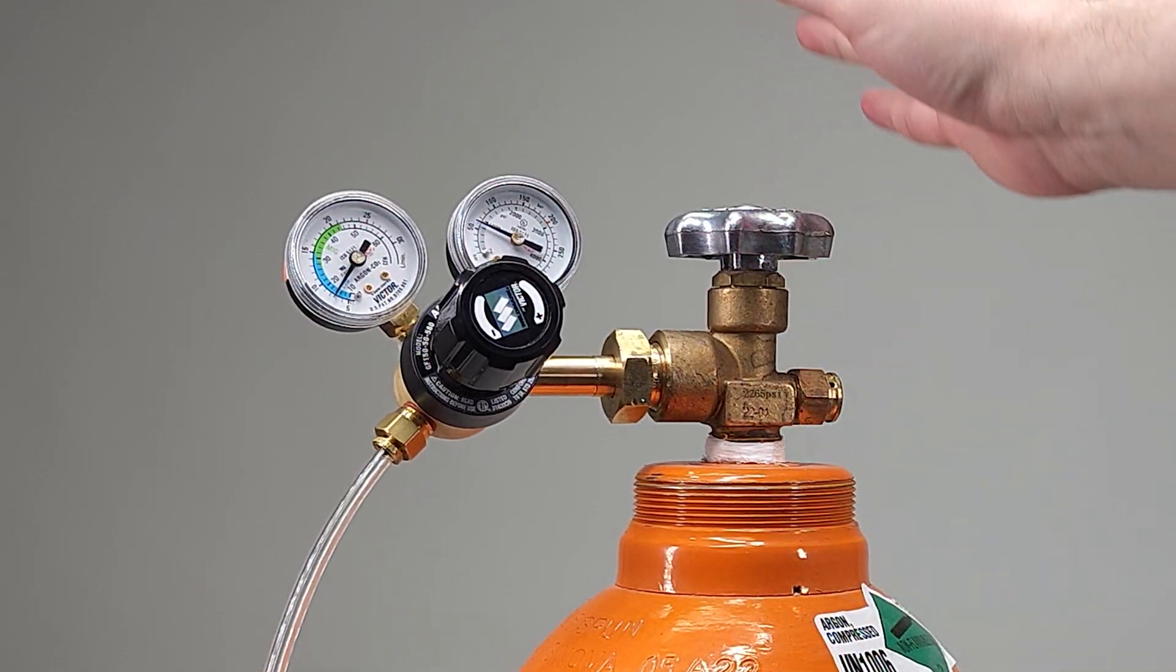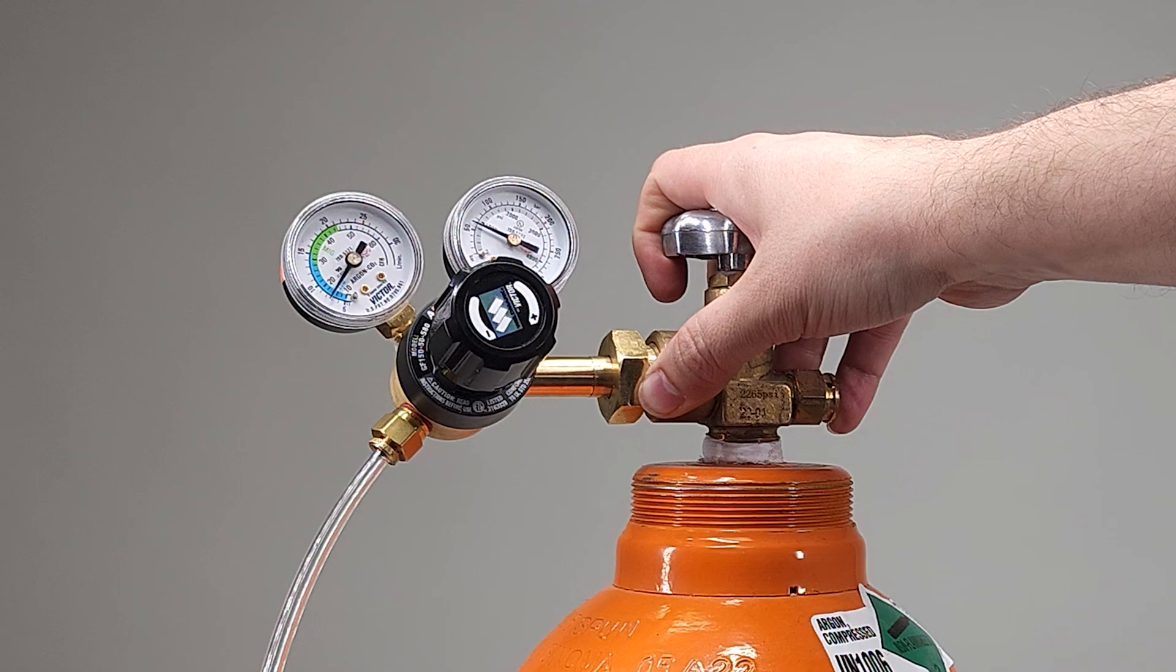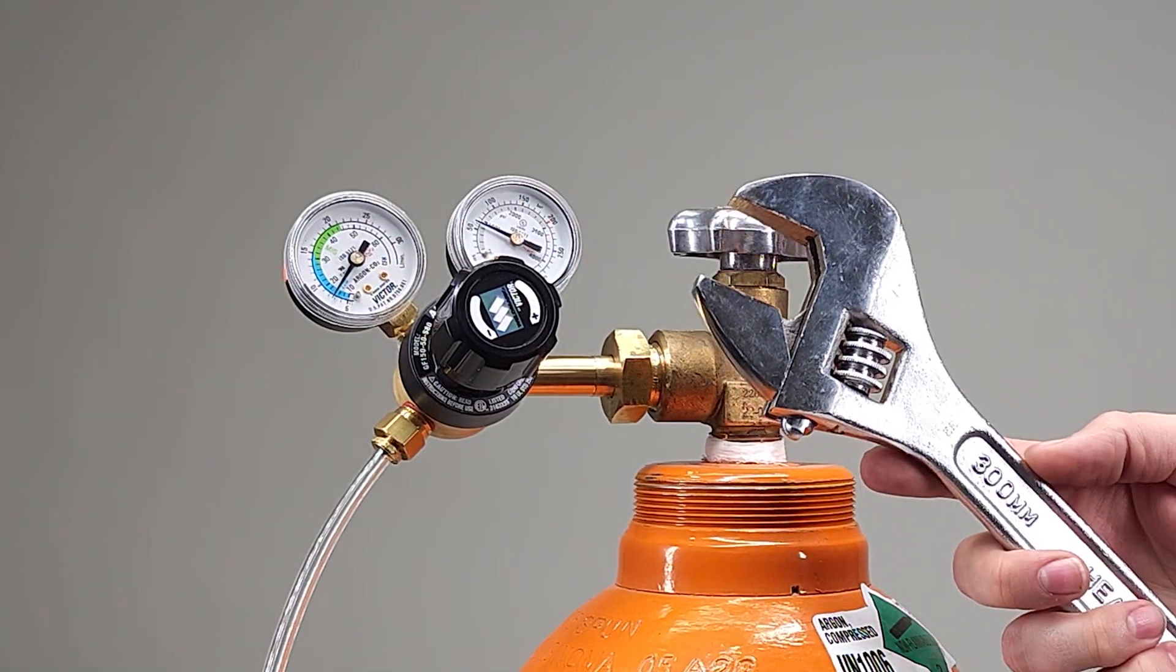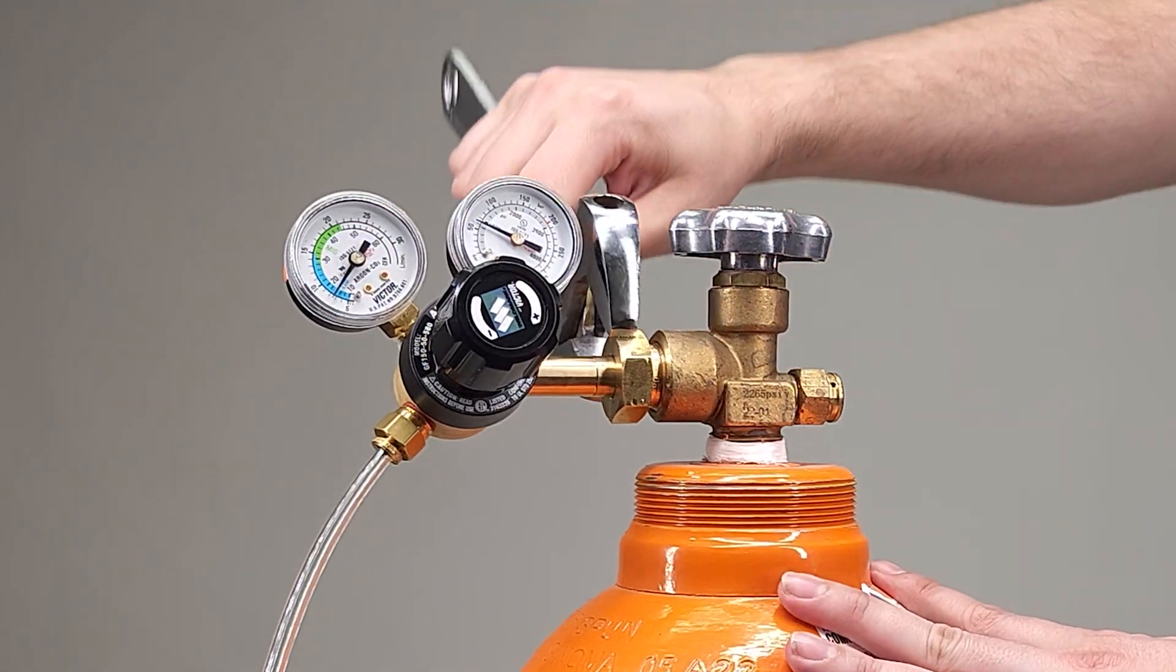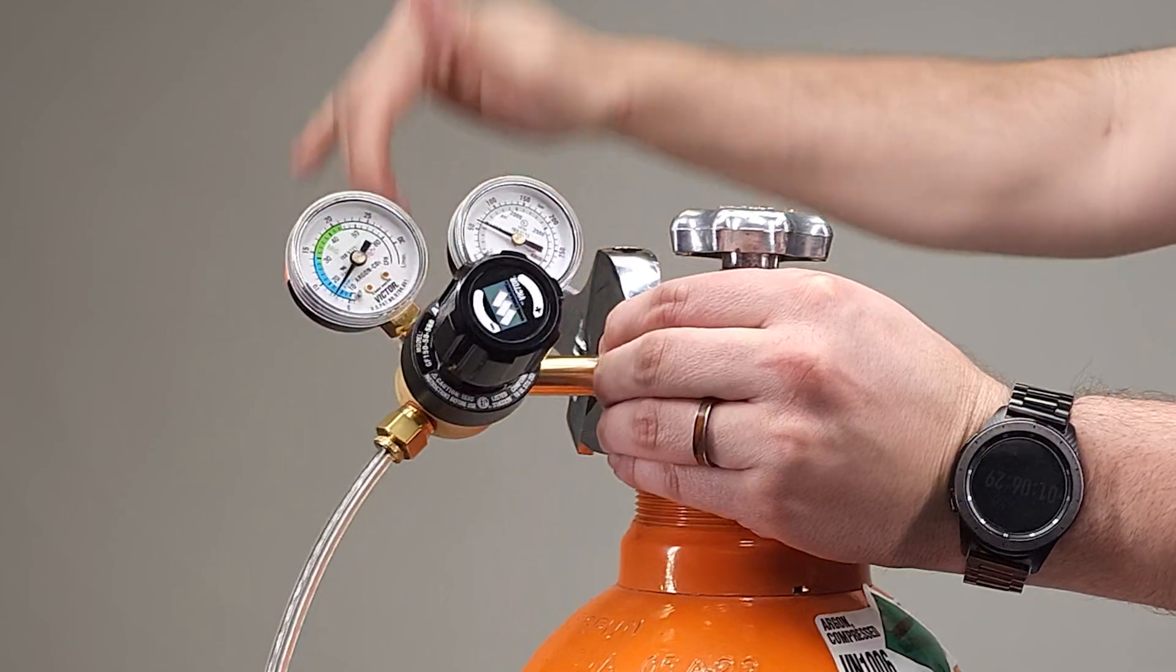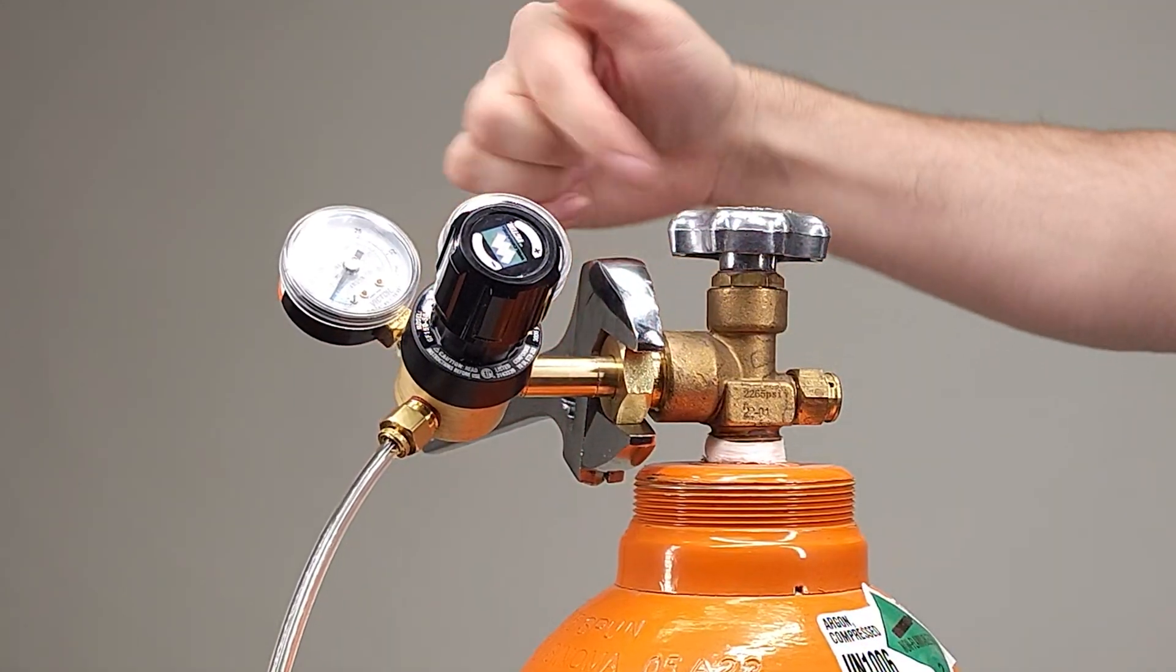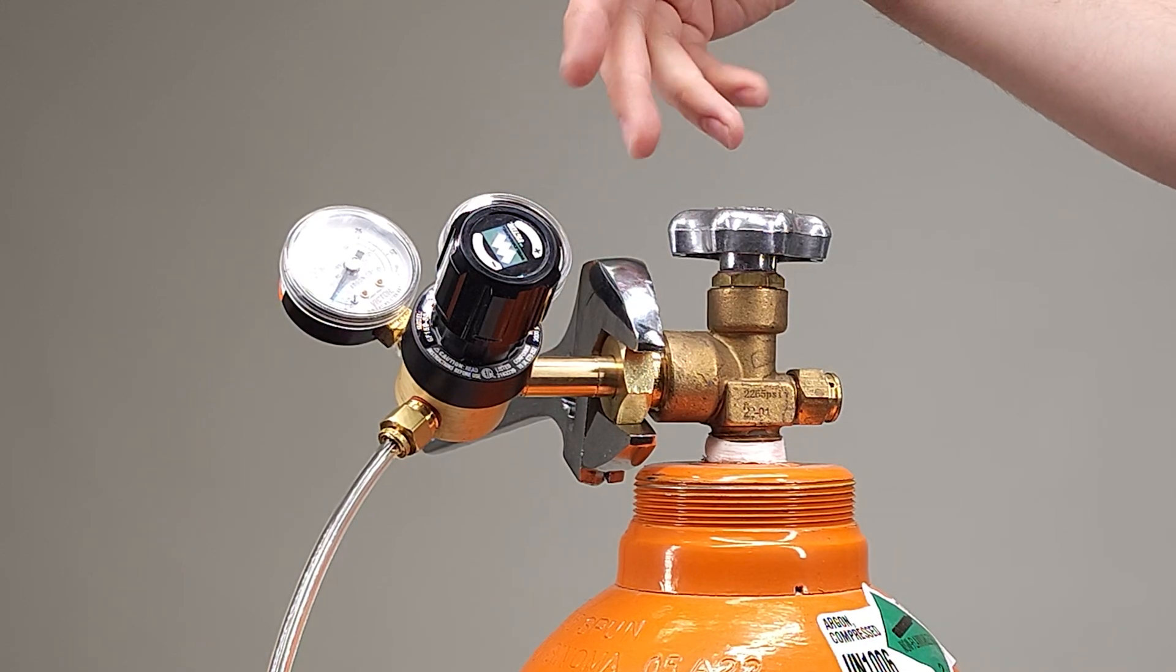When we're ready to take the regulator off we're going to tighten up the valve stem and then we're going to get our wrench out. I like to just lightly hit it with my hand and you'll hear a loud hiss if there's some pressure left in the regulator. That's just the air escaping through the regulator and the tank and that's totally normal.